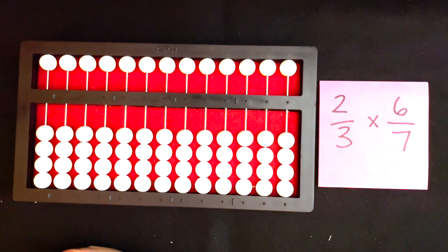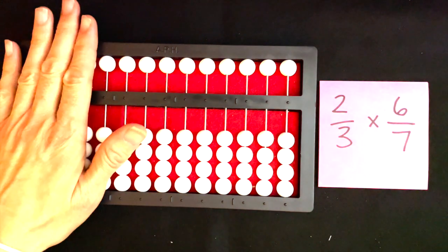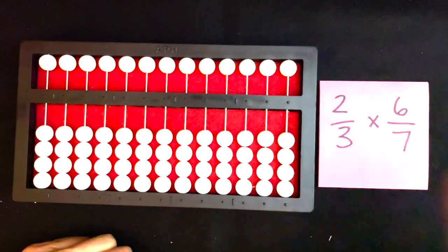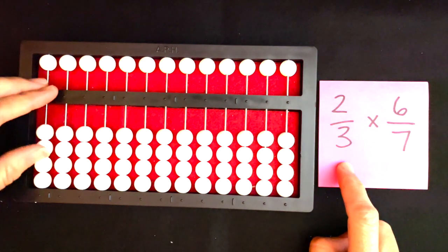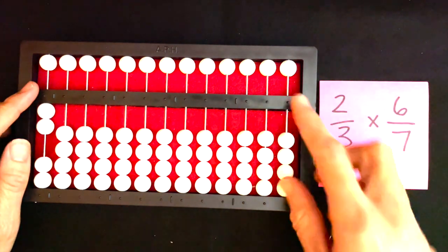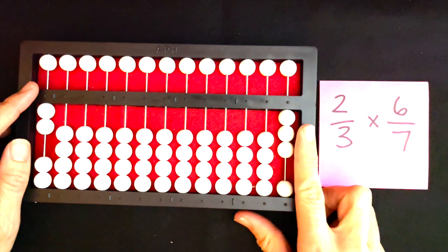I'm going to start by setting my numerators on the left-hand side of my abacus and the denominators on the right-hand side. For two-thirds, I'll set the two on the far left-hand side and the three on the far right-hand side.